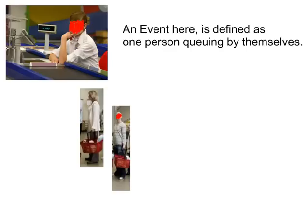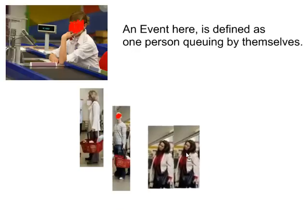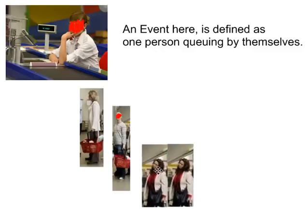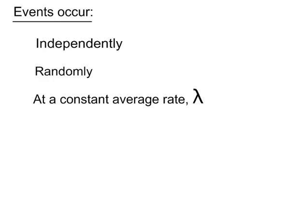If groups of customers who are shopping together turned up at the checkout together — which is what typically happens — then these two customers who are shopping together have not arrived independently of each other. So a Poisson distribution would be inadequate for modeling the number of customers queued at this checkout. Events must occur independently of each other.